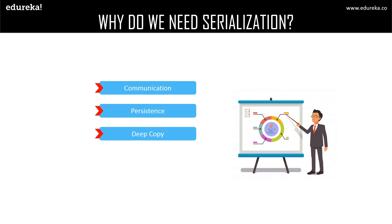The next reason for using serialization is deep copy. The cloning process is made simple by using serialization — an exact replica of an object is obtained by serializing the object into a byte array and then deserializing it. The next reason is caching: the time consumed in building an object is more compared to the time required for deserializing it. Hence, serialization minimizes time consumption by caching the giant objects.